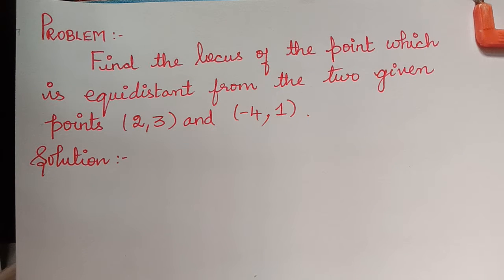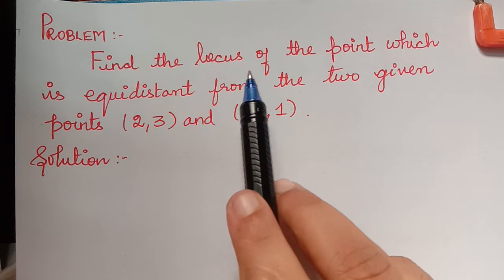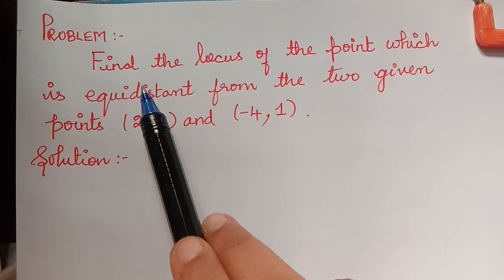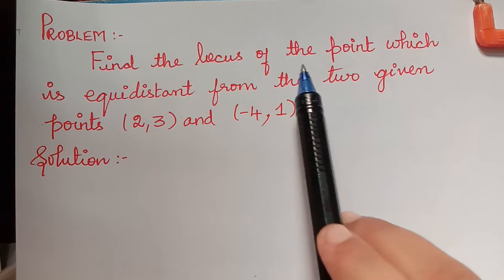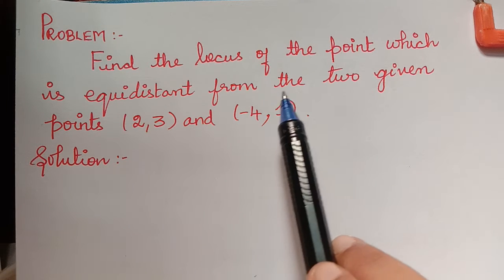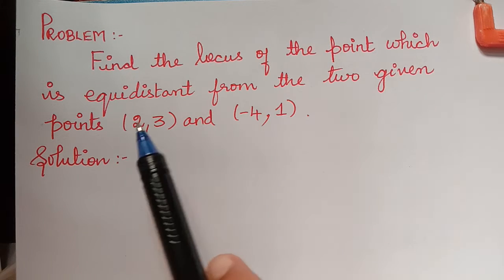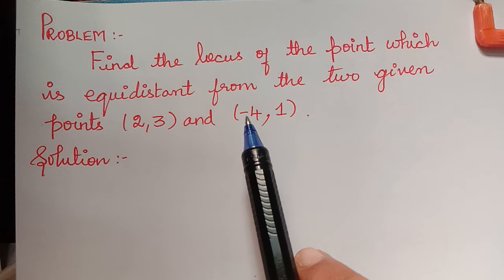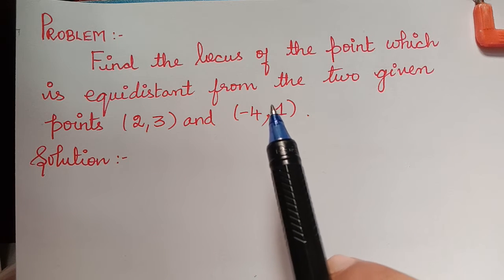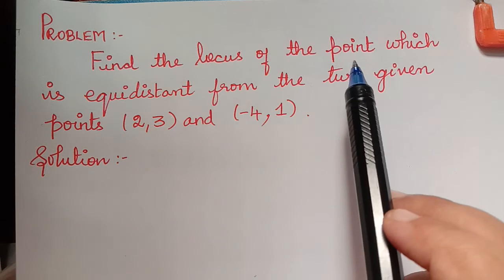Hello students. The next problem under the topic coordinate geometry is on locus of a point. The question is: find the locus of the point which is equidistant from the two given points (2, 3) and (-4, 1). So now, what is the locus of a point?